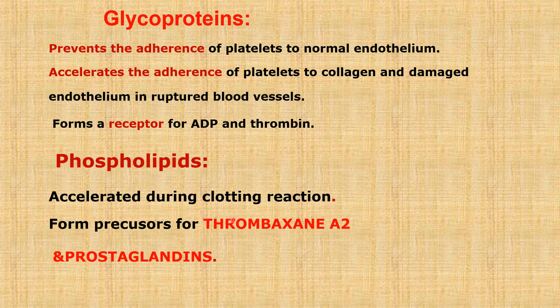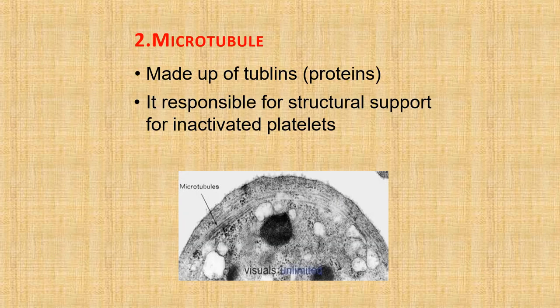Phospholipids are activated during clotting reactions and form precursors for thromboxane A2 and prostaglandin production. In the microtubules or cytoskeletal system, it is made up of tubulins or proteins and is responsible for structural support for inactivated platelets — maintaining their spherical or oval shape. There is a sub-membrane microtubular system consisting of many microtubules arranged beneath the membrane, made up of tubulins, with cytosolic motors like dynein and kinesin filaments also associated with them to support the discoid shape.